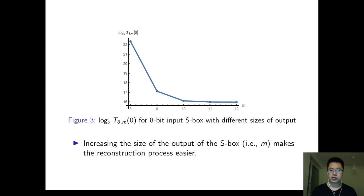We show the complexity curve for 8-bit input S-Box with different sizes of outputs. It can be seen that when the size of output of S-Box increases, the reconstruction process becomes much easier. It means that to keep a larger output, it is insecure to keep such an S-Box as a secret S-Box.